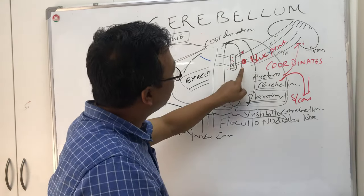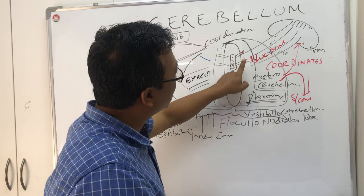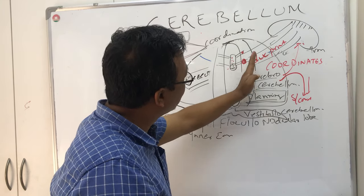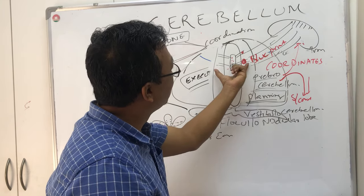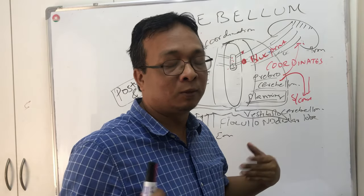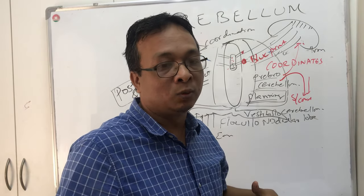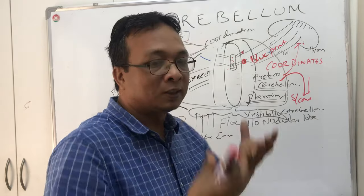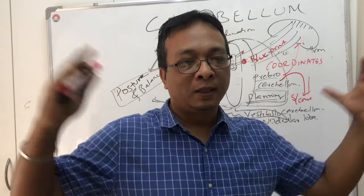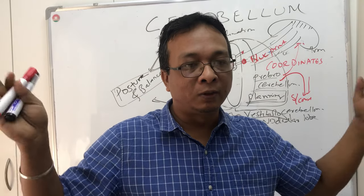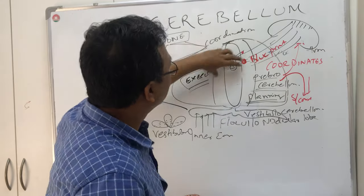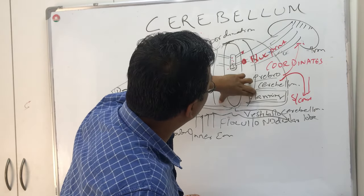So if there is any injury, clot, or trauma near to the vermis, it will affect all four limbs - two hands and two legs. The center part is the vermis and the surrounding area is the para-verminal area. That is the cerebellum in a nutshell.